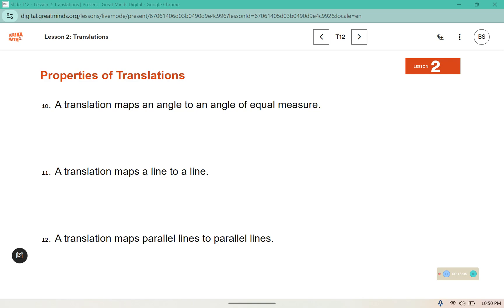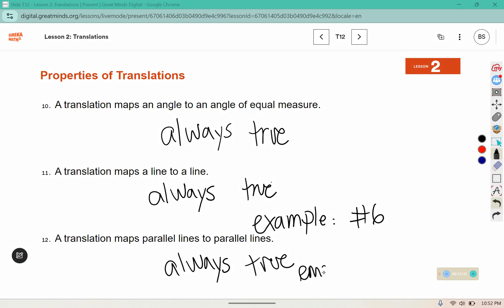A translation maps an angle to an angle of equal measure, that is always true. And you can see that in problem 6 where the angle between the lines remain the same. A translation maps a line to a line, that is also always true. A translation maps parallel lines to parallel lines, that is always true, and we saw that in problem 7 in the rectangle piece.